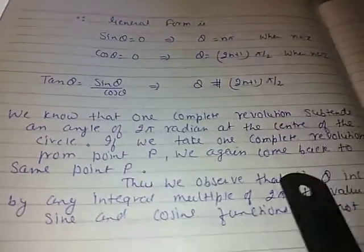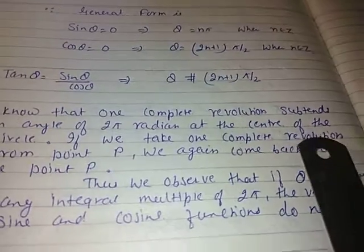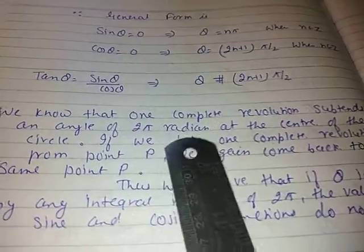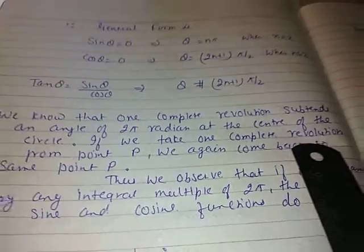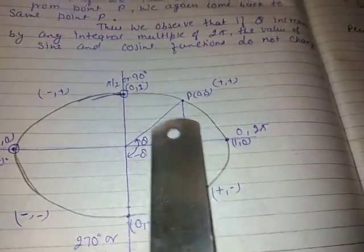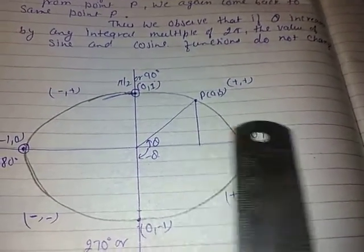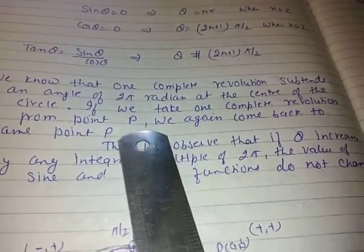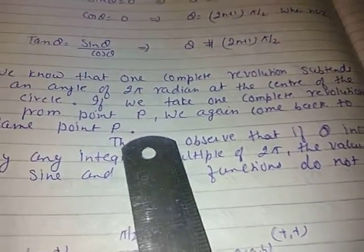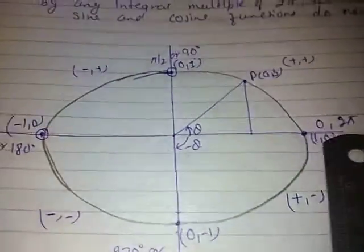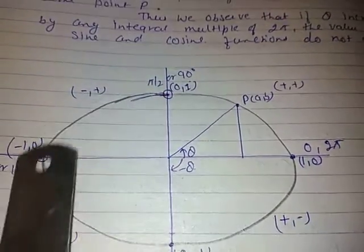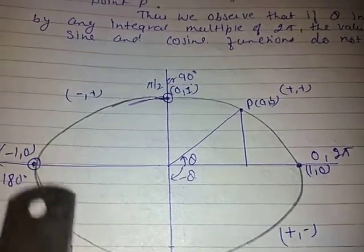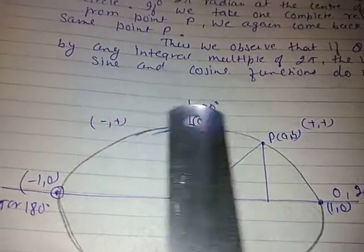We know that one complete revolution subtends an angle of 2π radians at the center of the circle. If we take one complete revolution from point P, we again come back to the same point P.